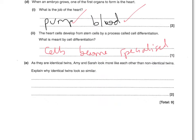As they are identical twins, Amy and Sarah look more like each other than non-identical twins. Explain why identical twins look so similar. There are two marks here. One mark for saying that they came from the same egg and sperm cells, or the same fertilised egg, or the same embryo. The second mark is for saying that they are clones, or have the same DNA, or have the same genes.